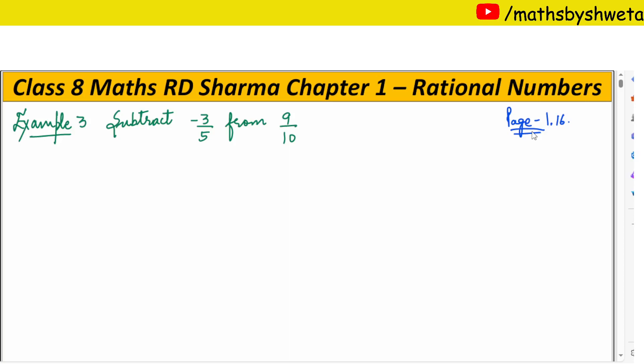I am going to give you example 3. The first two examples we learned to subtract the rational numbers. How do we do? From the number we have written, minus sign, and minus as it is written. So, 9 upon 10 minus minus plus 3 upon 5.